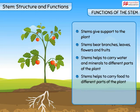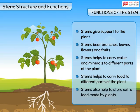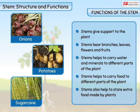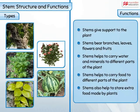The stem also helps to carry food prepared by the leaves to different parts of the plant. Stems of some plants also help to store the extra food made by plants. We eat many such stems, like onion, potato, and sugar cane. So now whenever you look at the stem of a plant, you will know how important it is to the plant.